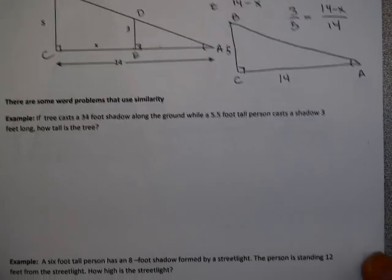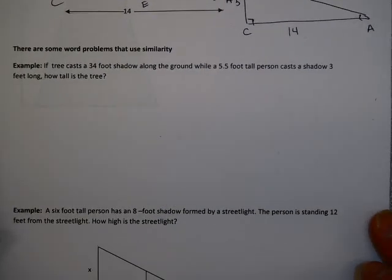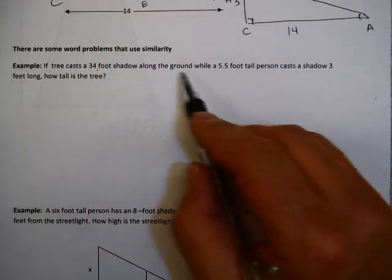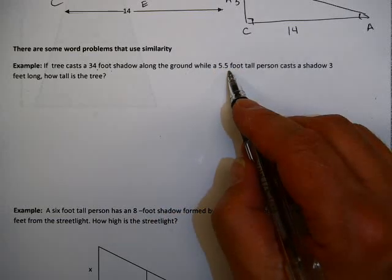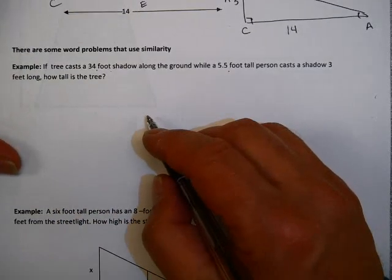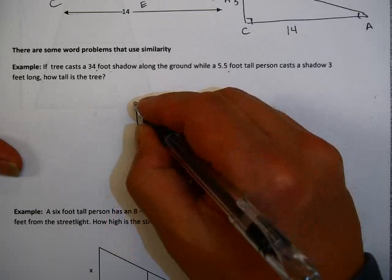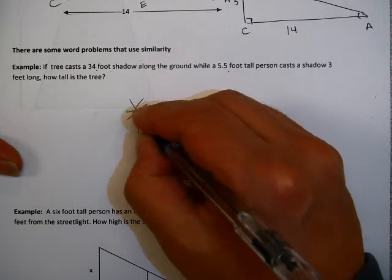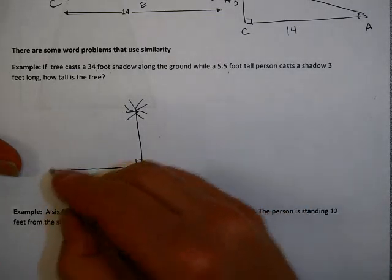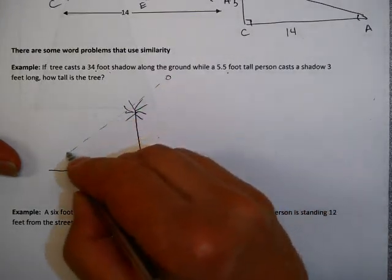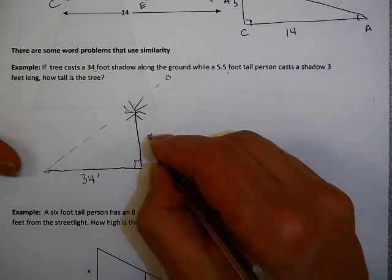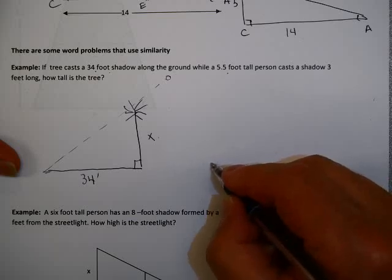Now, here's another problem where we might use some word problems to help me deal with similarity. If a tree casts a thirty-four-foot shadow along the ground, while a five-foot-five person casts a three-foot-long shadow, how tall is the tree? So, here's my tree. Not much of an artist. So, there's my tree. And this tree is casting a shadow on the ground. We can assume our tree is straight up. The sun is up here, so it's helping cast this shadow down here. And we know this shadow is thirty-four feet. I don't know how high the tree is.